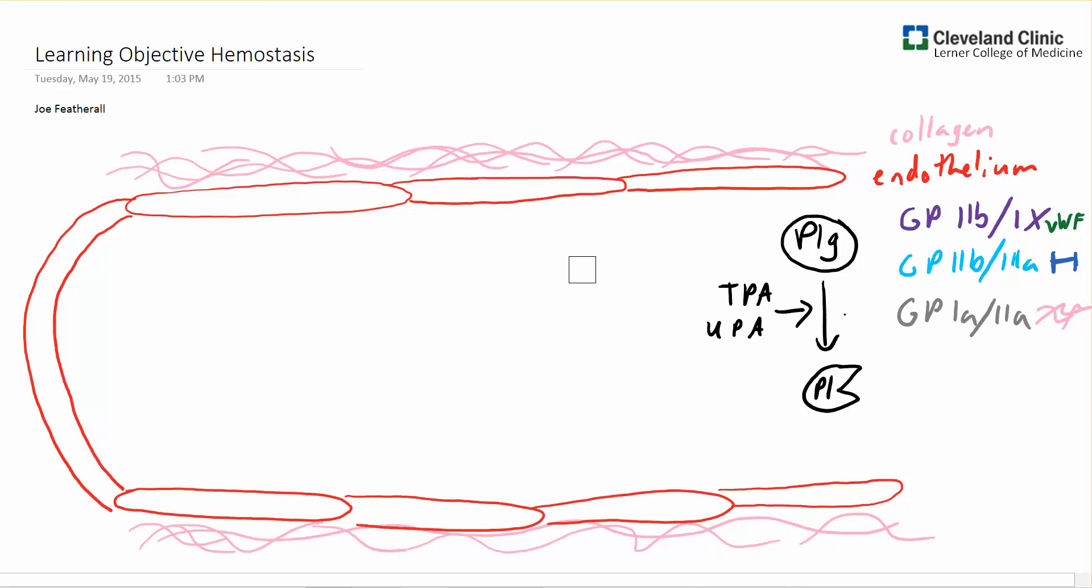Now, there are remnants of this clot that are left floating around. And particularly one that has a quite useful clinical correlation is the D domains of fibrin that are linked together into a dimer. And this is known as a D-dimer.